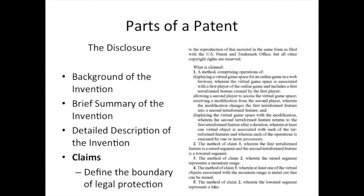The last part of the patent, which is short but very important, are the claims. These define the legal boundary of the patent and are often written by patent experts and lawyers, because they are what is used in court to decide what is protected by the patent. They can be independent claims, such as '1A, a method comprising the placing of an order,' or dependent claims, such as '2, the method of claim 1, whereas...' It's often good to consult a patent attorney or legal expert with respect to claims, but there are also books for helping to write them.